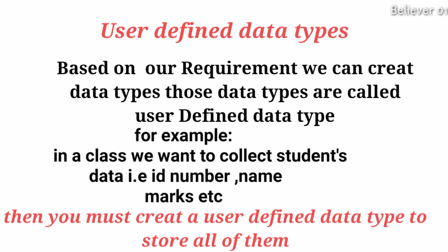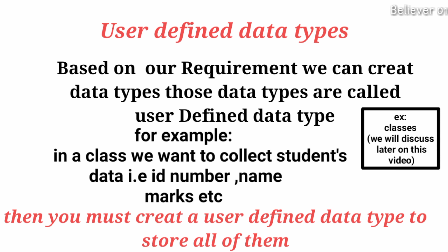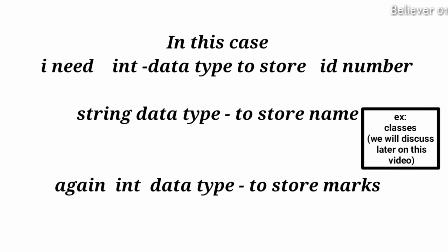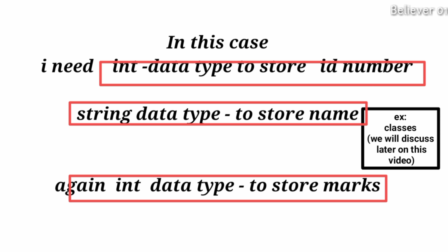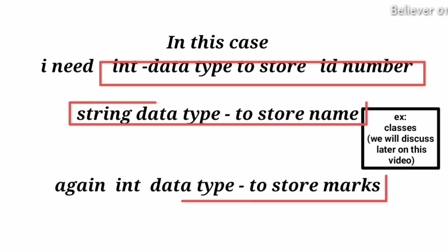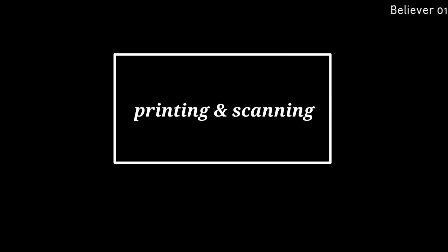User-defined data types: based on our requirement we can create data types — these are called user-defined data types. For example, in a class we want to collect student data such as ID number, name, and marks. Then you must create a user-defined data type to store all of them. An example of a user-defined data type is classes. In this case we need an int data type for ID number, a string data type for name, and again an int data type for marks.